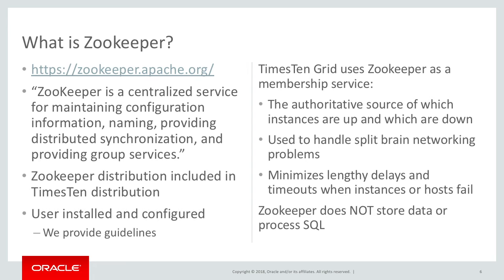The X10 distribution — when you download that from Oracle and untar it — you'll get a copy of the X10 binaries, but you'll also get a copy of the ZooKeeper distribution. X10 grid uses ZooKeeper as a membership service; it is the authoritative source of which X10 instances are up and which are down. Every X10 instance in a grid connects to ZooKeeper and sends heartbeat information to let ZooKeeper know it's up and running. The ZooKeeper servers keep track of that information and can vote among themselves about what's actually true at any given moment.